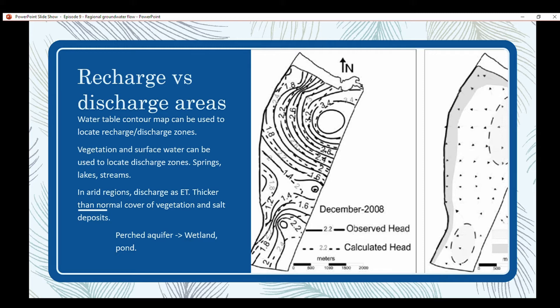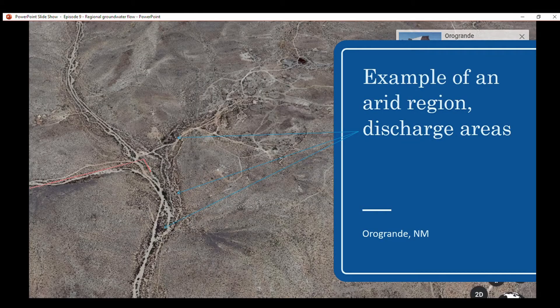This is one of my favorite places in this region of the country. Oro Grande is a very dry place typically, but it has some beautiful streams. You can see the vegetation density occurs along where the streams are. That's where the water table is most likely the highest. Obviously, vegetation is going to be at its thickest density along these stream areas.